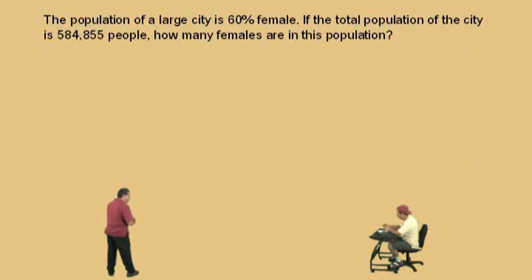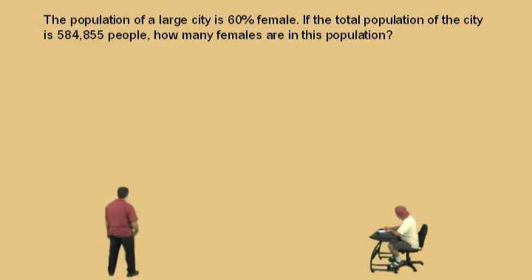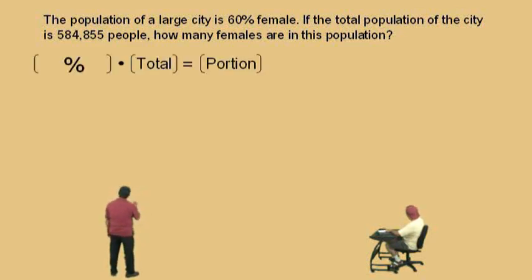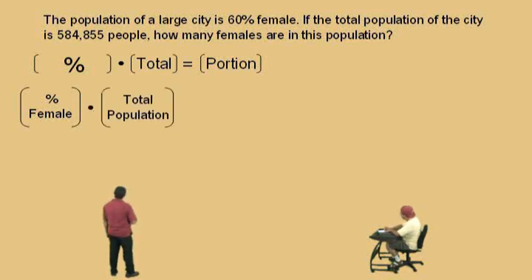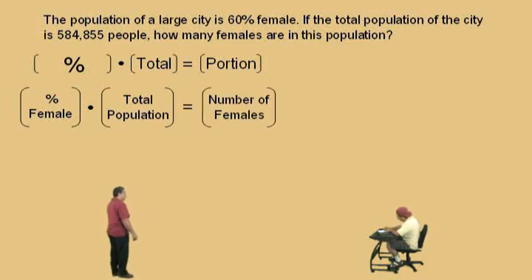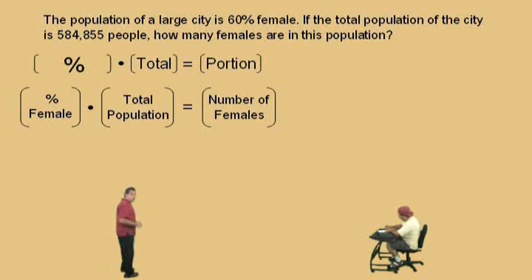The population of a large city is 60% female. If the total population of the city is 584,855 people, how many females are in this population? Here's our format: a percent of a total is a portion. Our percent is percent female — we're given that percentage. Our total is the total population, and our portion is the number of females. Which one are we trying to find — the percent, the total, or the portion? The portion, because it's the number of females we're looking for in this total population.